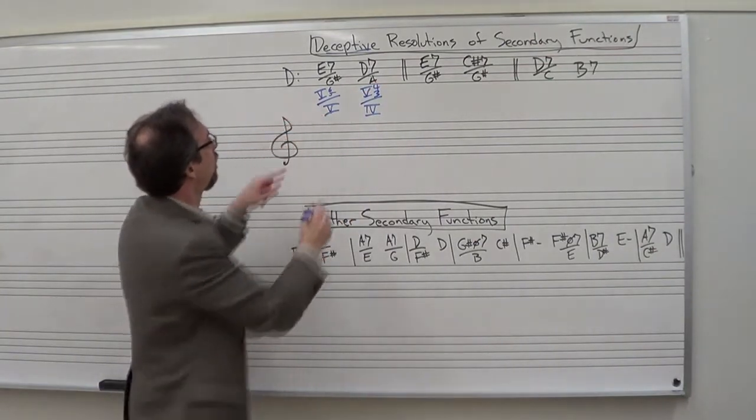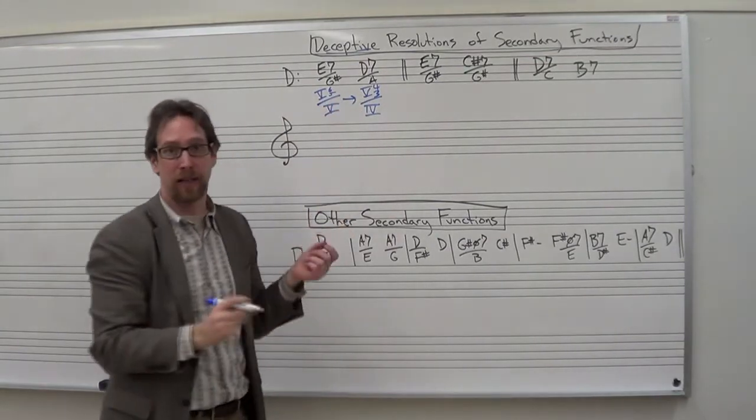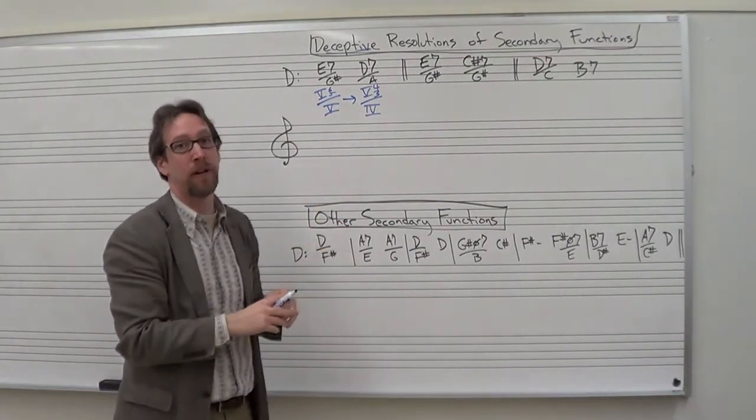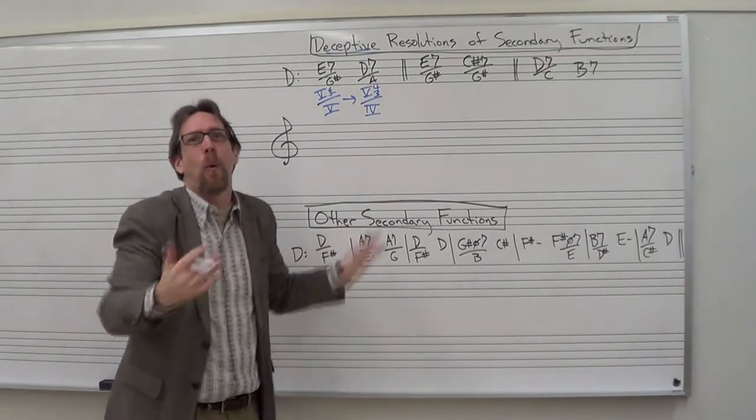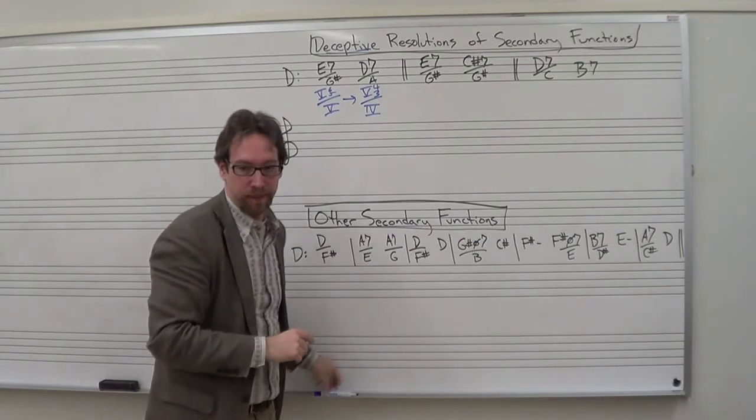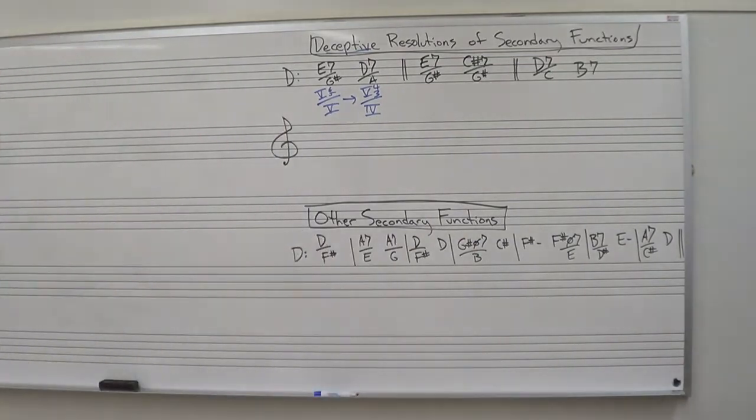So 5-6-5 of 5, we would expect that to resolve to a 5 chord, but it doesn't. It goes to a 5-4-3 of 4. Then the question is, why does that work? How does that work? Let's first listen to hear what it sounds like.